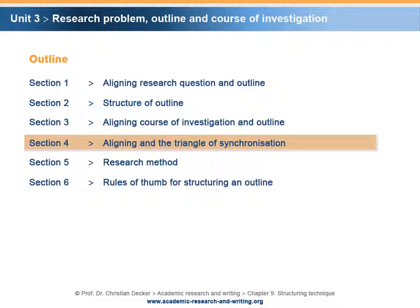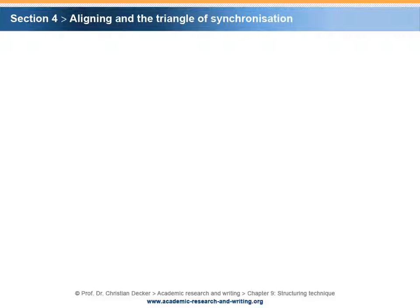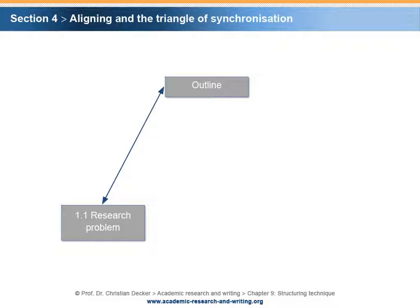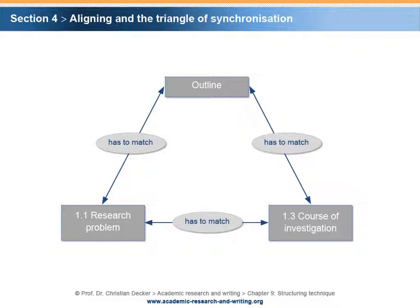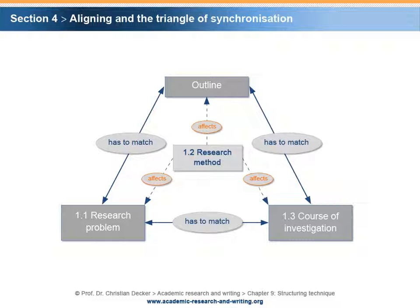Section 4 – Aligning and the Triangle of Synchronization. Basically, the above explained relations can be visualized by means of a triangle. The outline, the subchapter research problem, and the subchapter course of investigation have to be logically matched. The chosen research method can be explained in a separate subchapter research method. The matching and alignment of the elements that form the triangle can be viewed as a process of synchronization.